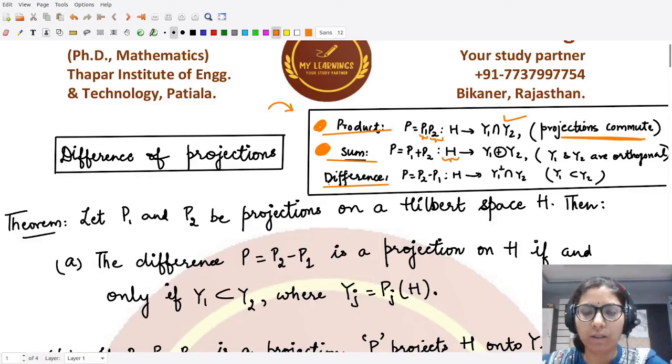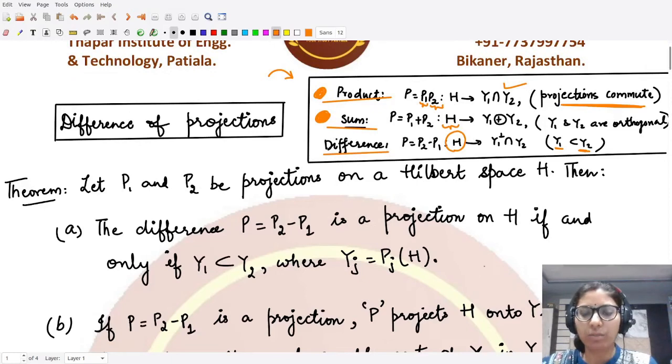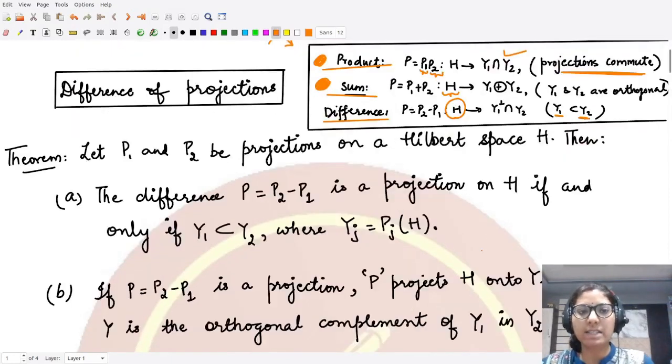Now in case of difference of two projections, what is the property? The property is that it would map all of this Hilbert space to a space which is nothing but the orthogonal complement of the space Y1 intersection with Y2. In this case, the condition is that Y1 should be contained in Y2. This thing will be clear from this theorem here.